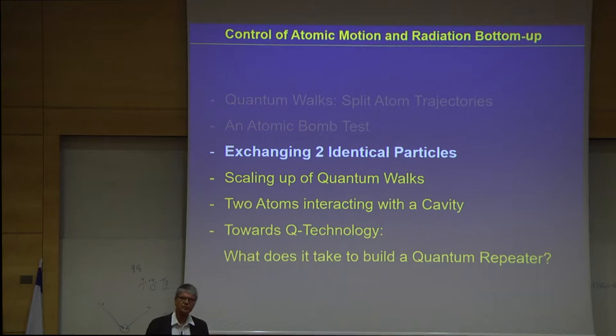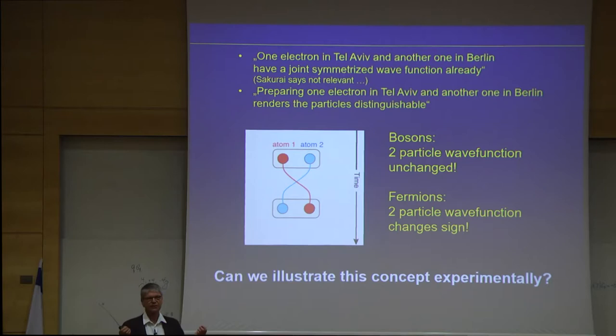So I chose that we can really test at this level the superposition principle here in a quantitative way. So that was one application of the atom interferometer. Now let's go to this question of exchanging two identical particles. And so if you ask the theorists in their theory lecture on fermions what they are, then they say they take one electron here, another one here. And if you exchange them, they have to exchange a sign. They have to flip the sign of the wave function. And so then if you look around, then there are sayings like, one electron in Tel Aviv and another one in Berlin have a joint symmetrized wave function already.